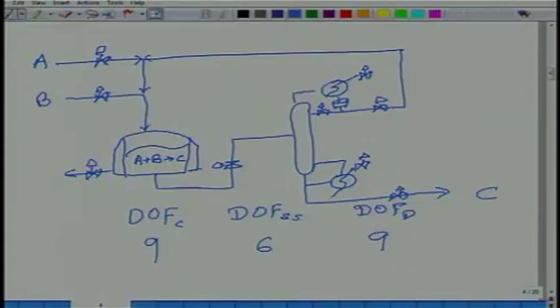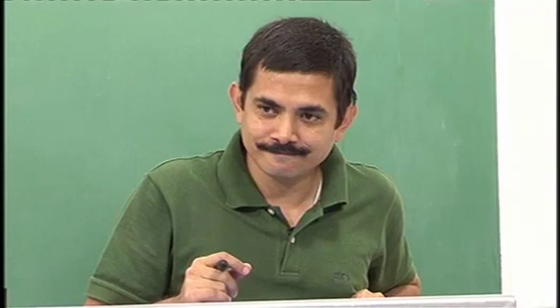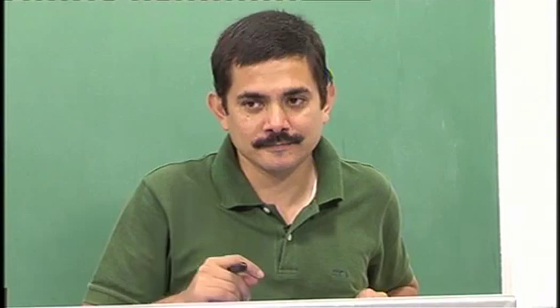The point is you do not have to count equations and variables and subtract to find DOF. If you can figure out how many independent valves there are, you know the control DOF, from which you can find steady state DOF and design DOF. No modeling is needed — it is very straightforward. Of course, you can always verify by counting variables and equations rigorously and get the same answer.